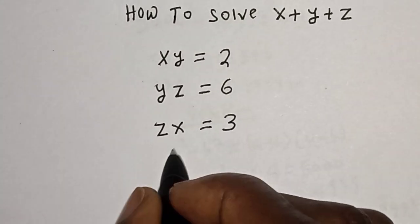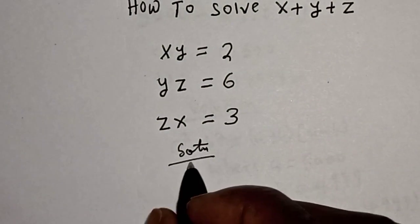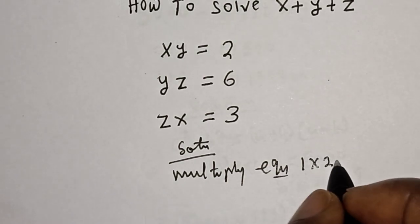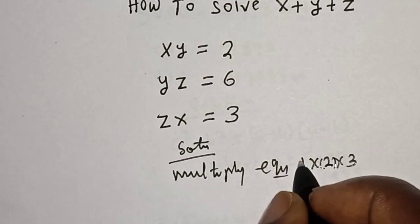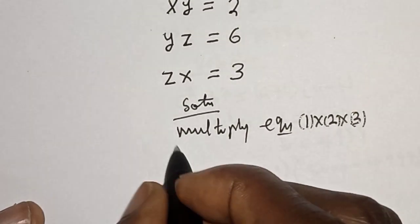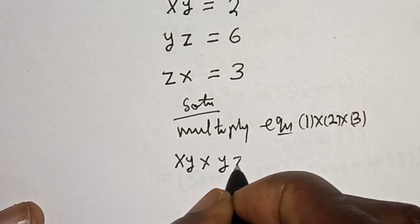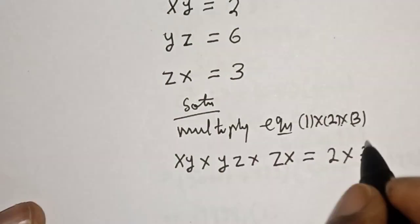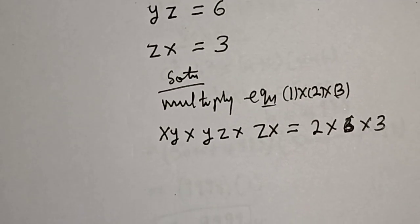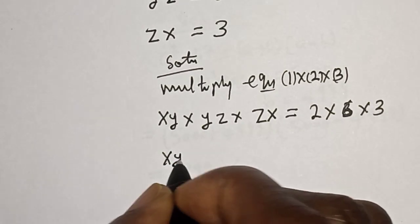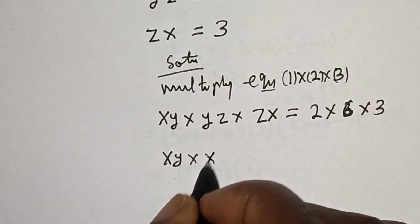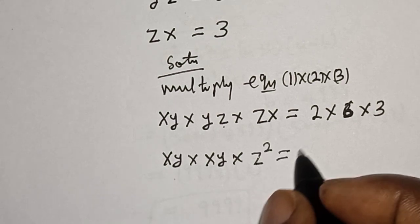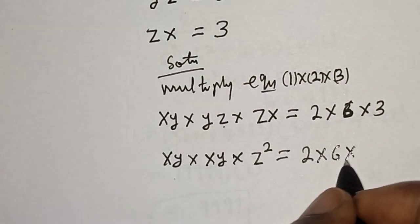Solution: let's multiply equation one by two by three — that is xy multiplied by yz multiplied by zx is equal to 2 times 6 times 3. This gives us (xy)(yz)(zx), which equals x²y²z², equal to 2 multiplied by 6 multiplied by 3.